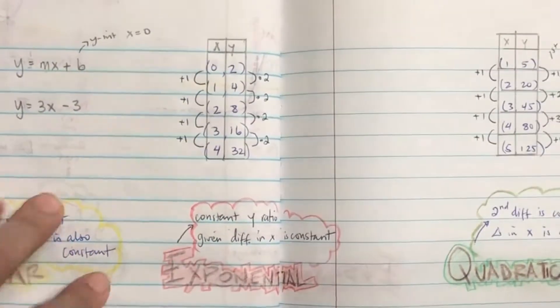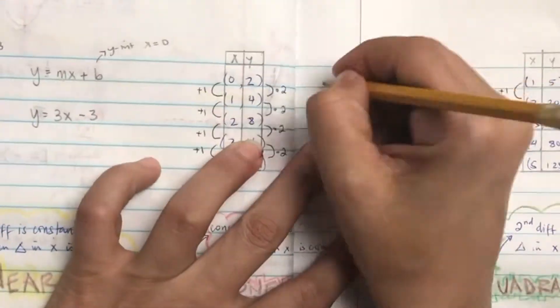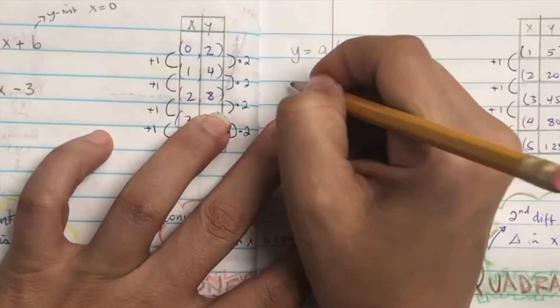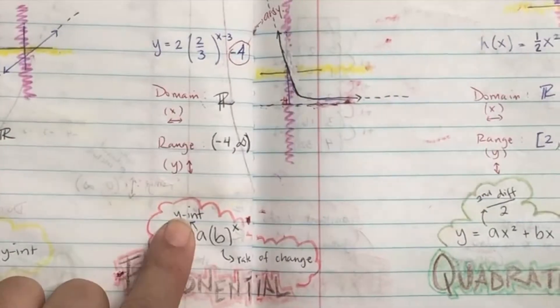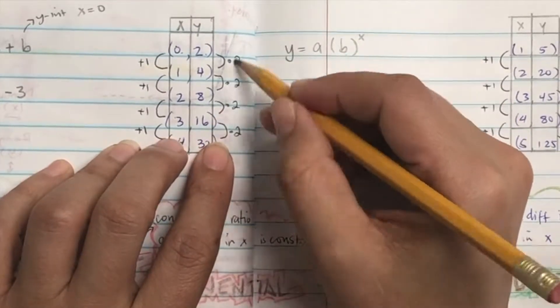For exponential, it's y equals a parenthesis b raised to the power of x, where a is your y-intercept. So where x is equal to 0, y is 2. b is how is it changing. This is changing by 2.